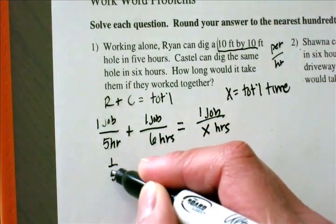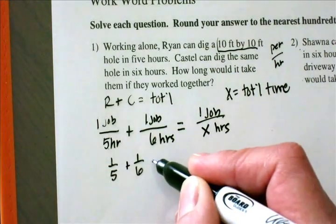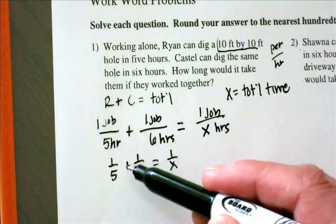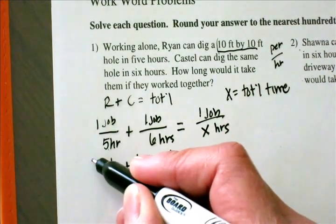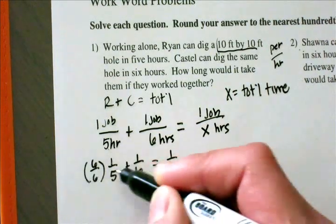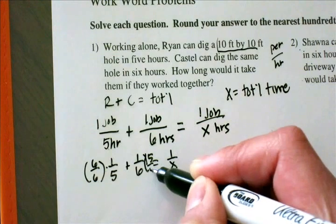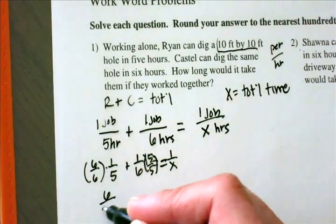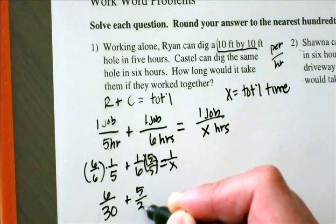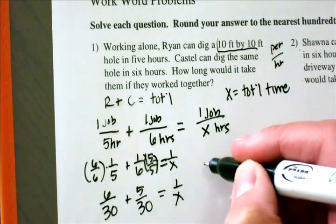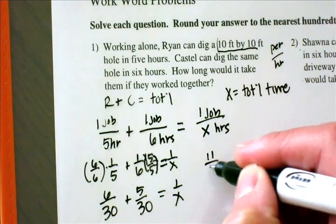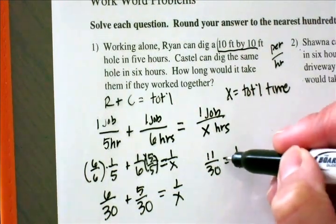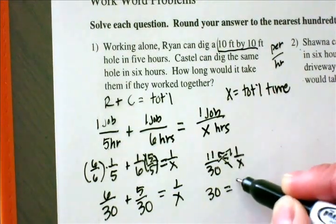Writing this out, I have 1/5 plus 1/6 equals 1/x. When you're adding two fractions, the first thing you need is a common denominator. I'm going to multiply this by 6 over 6 and multiply this by 5 over 5. That gives me 6 times 5 for my common denominator, so I'll have 6 over 30 plus 5 over 30 equals 1 over x, giving me 11 over 30 equals 1 over x. To solve for x, I'm going to cross multiply, which gives me 30 equals 11x.